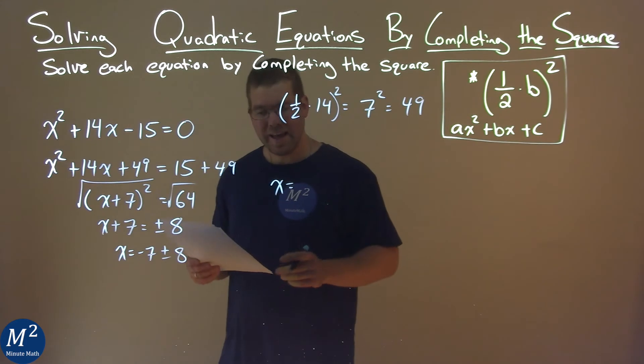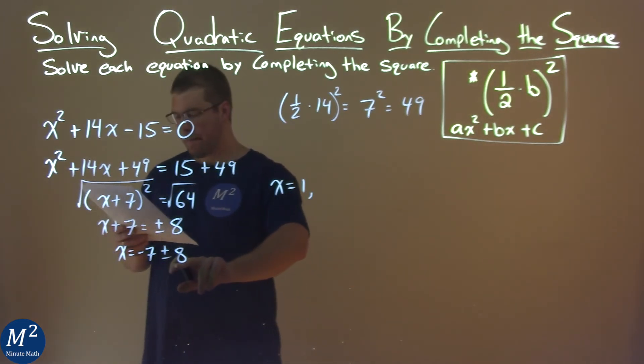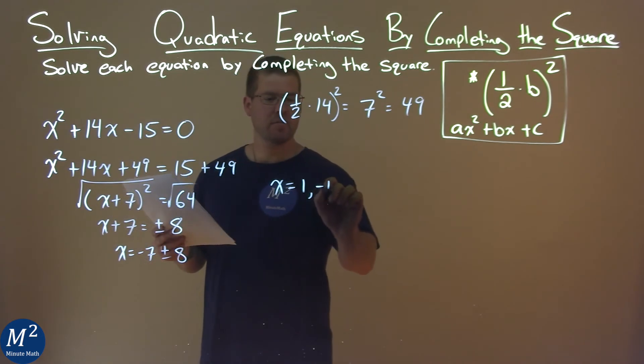Negative 7 minus 8 is negative 15. And so, my final answers are x equals 1 and negative 15.